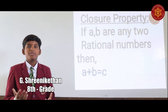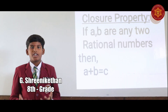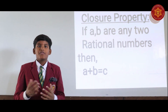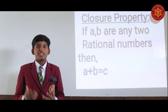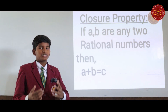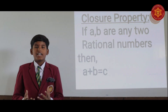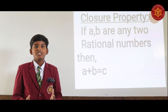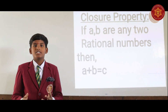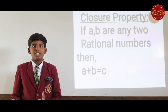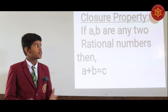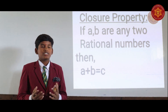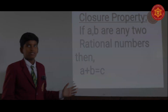Good morning, everyone. My name is Jishini Ketan. Today, I would like to explain the concept of closure property. If A and B are two rational numbers, then A plus B equals C, which is also a rational number. For example, 5/7 plus 13/7 equals 18/7, which is also a rational number. The sum of two rational numbers is a rational number — A plus B equals C — under addition.